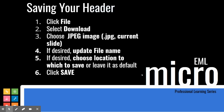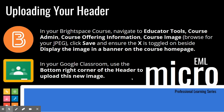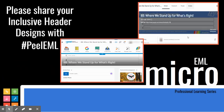The saving process, regardless of Google Classroom or Brightspace, is the same, and the steps are listed for you here. When you are ready to upload your saved image in Brightspace, you will navigate to Educator Tools, Course Admin, Course Offering Information, and you are going to browse for that JPEG. You will see here that we have brought that image into the background.